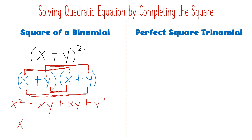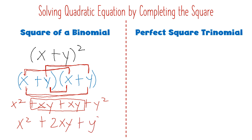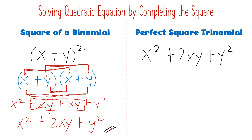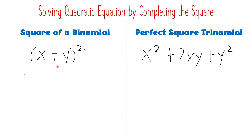When you simplify, it will be x², then combine like terms: xy plus xy gives positive 2xy, then copy positive y². So the answer is the perfect square trinomial: x² + 2xy + y². So when we solve for this square of a binomial, that is the result, and it is a perfect square trinomial.